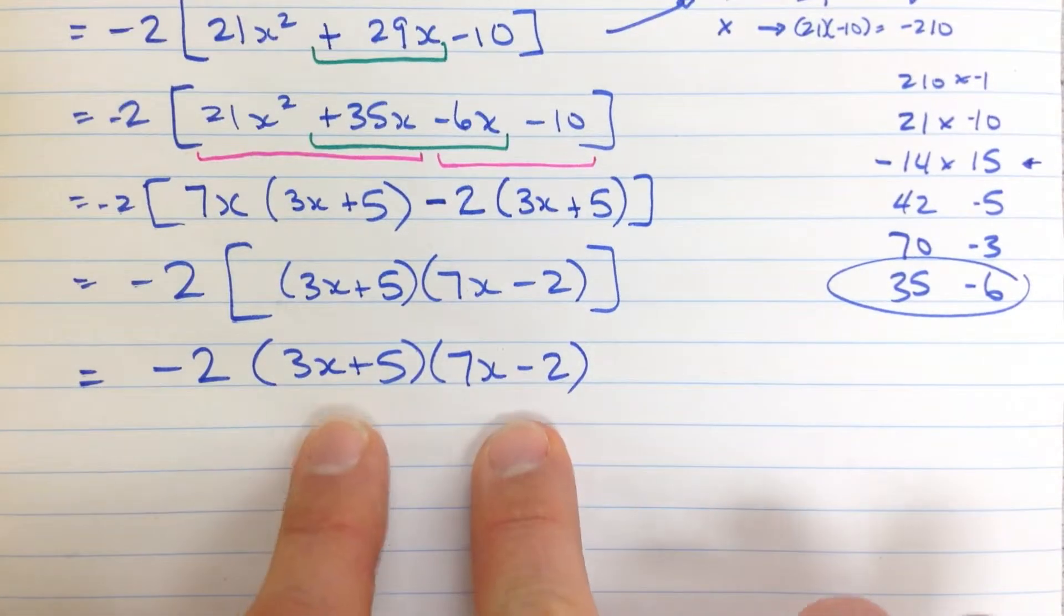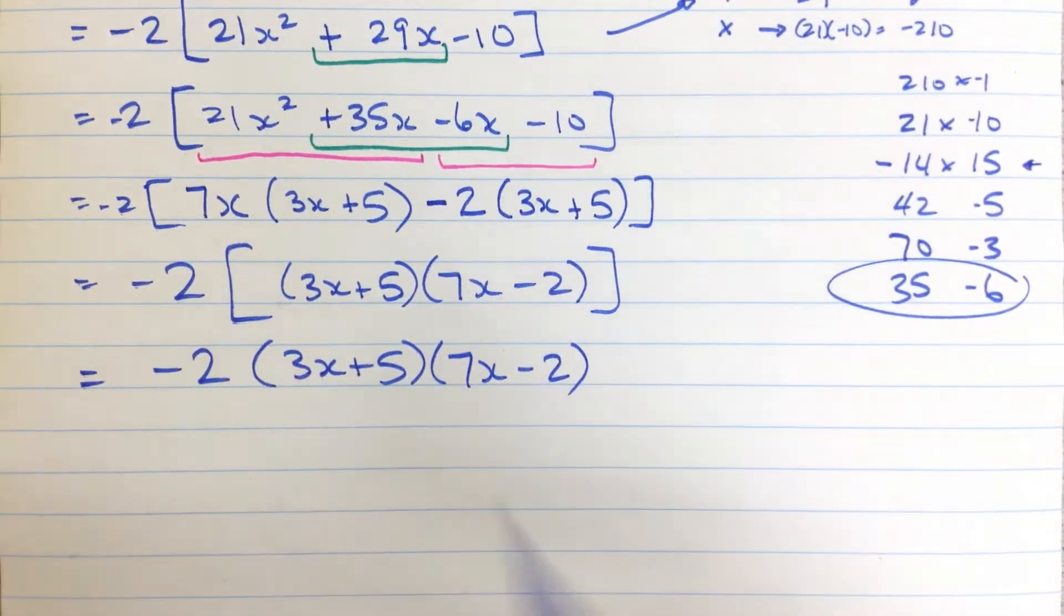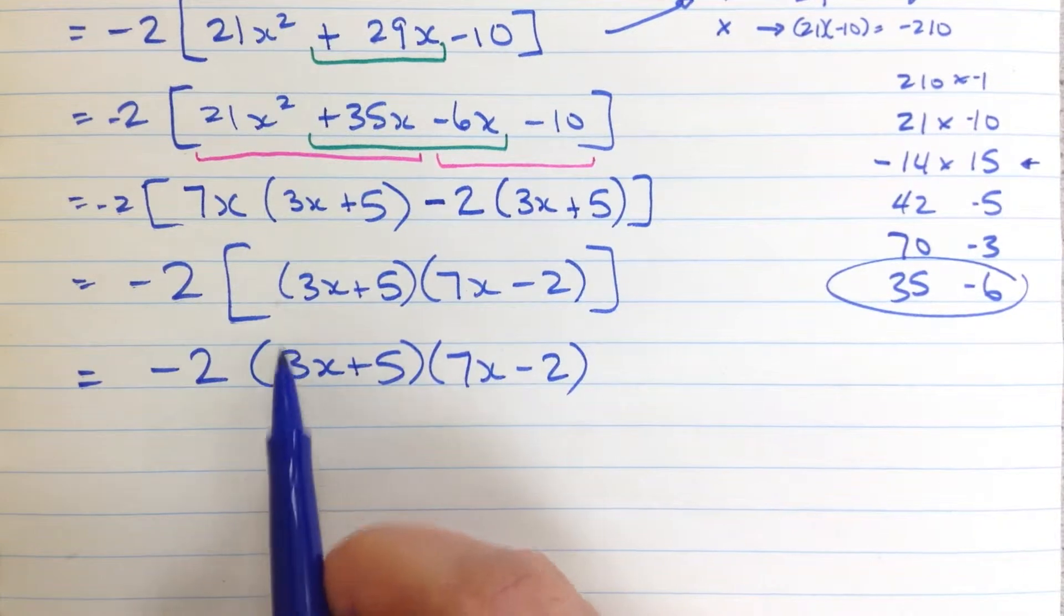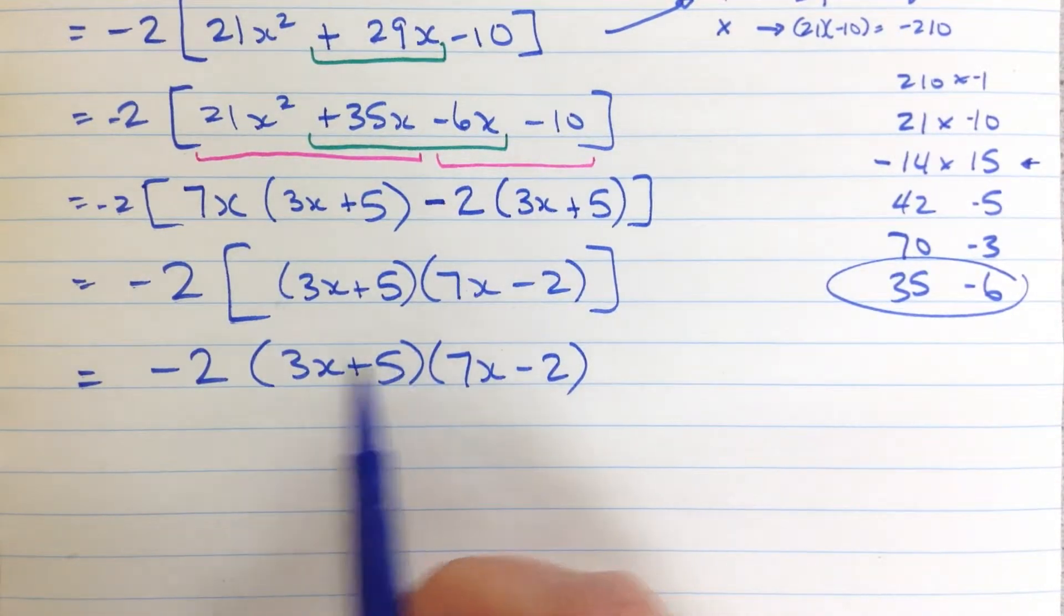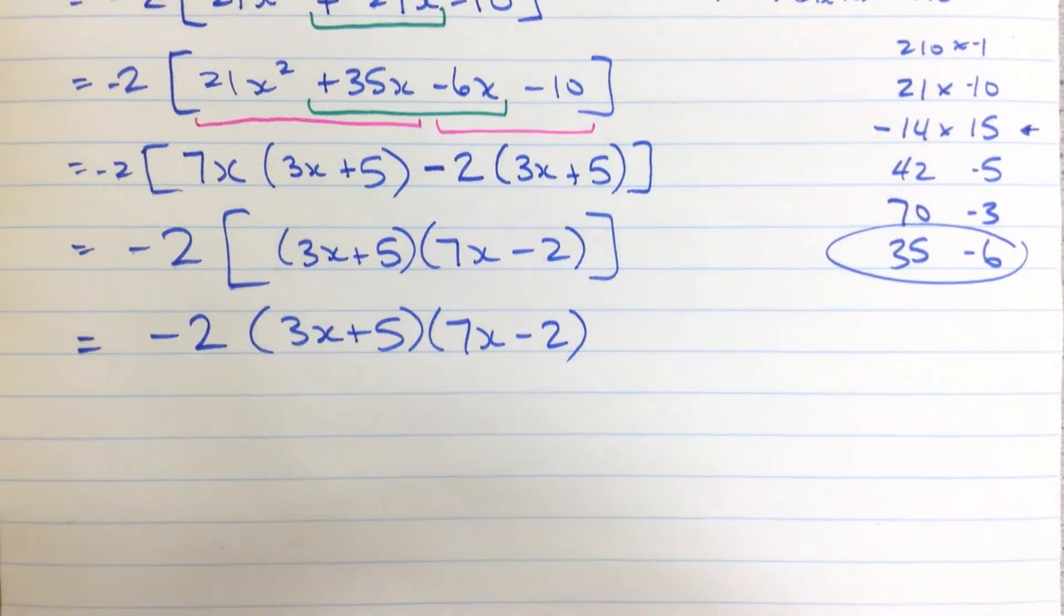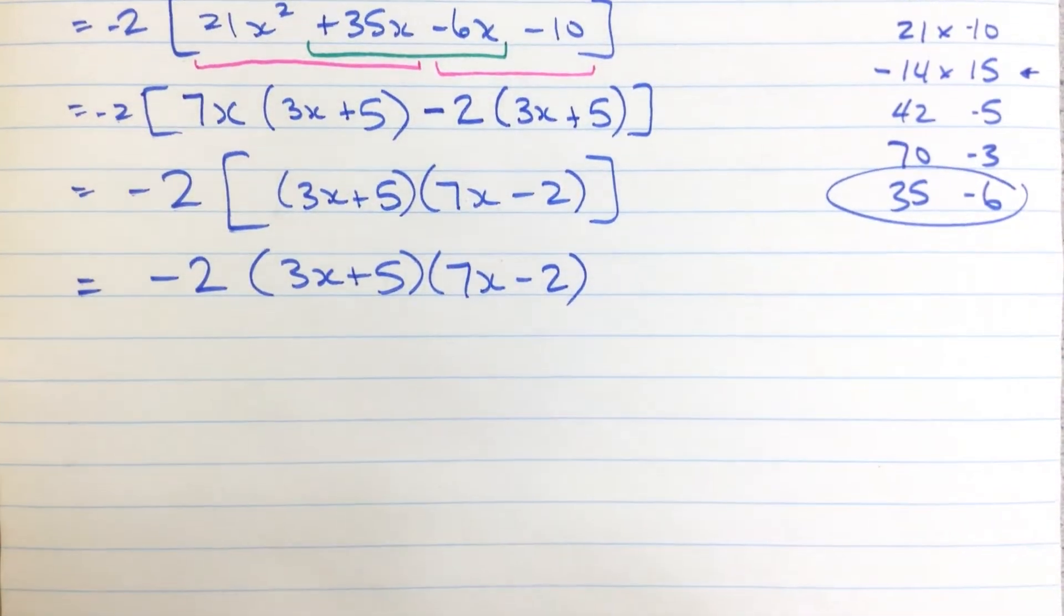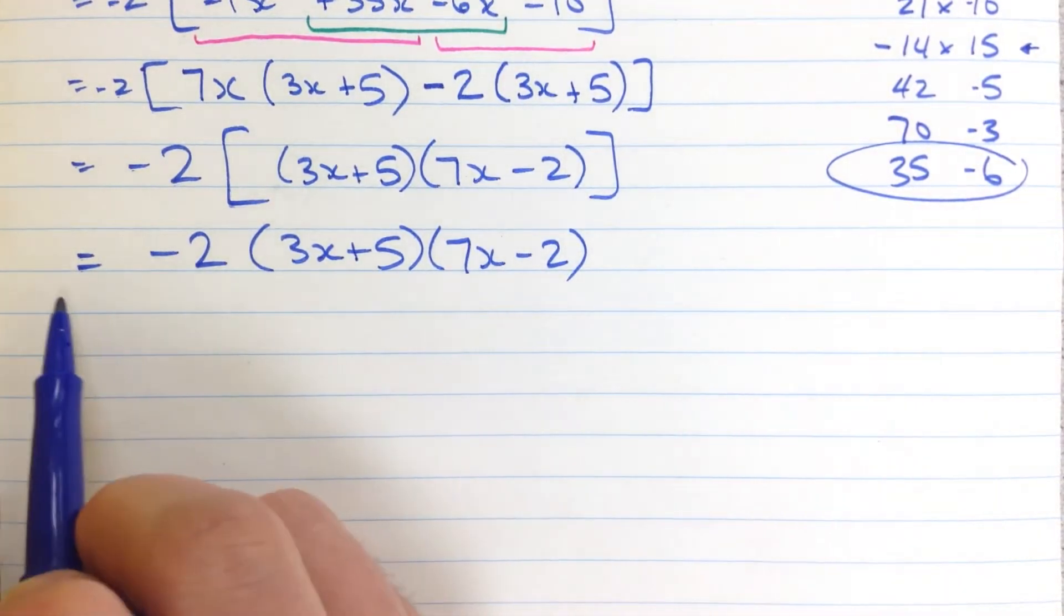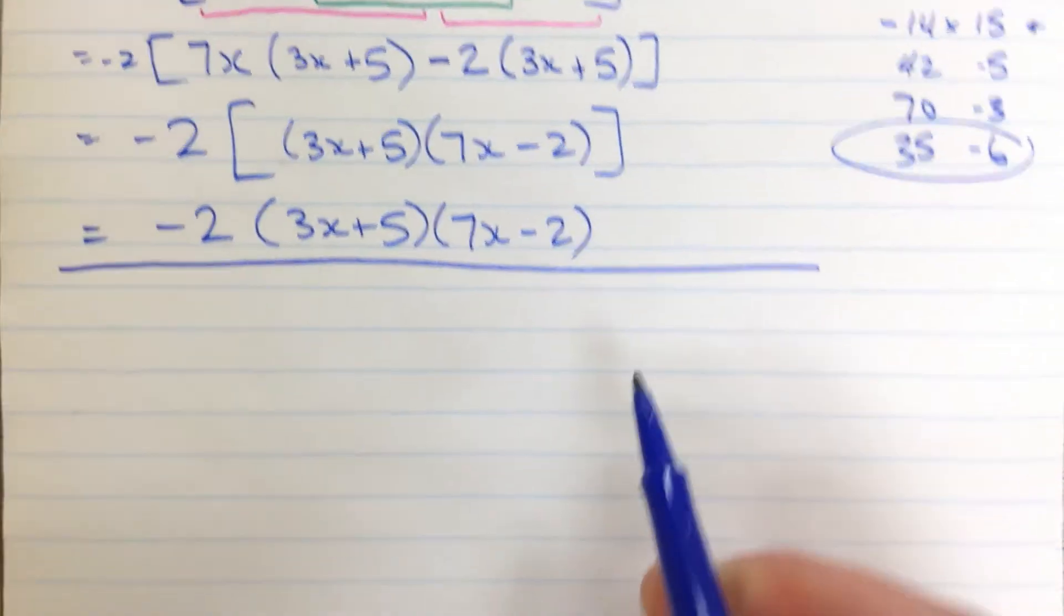So you would usually see this as -2 times (3x + 5) times (7x - 2). And these might be in a different order. If you ended up with an answer that was, say, one of these binomials was, say, 6x plus 10, then that's because you haven't factored the 2 out. And it's a good practice to factor it out all the way to the end. It's not 100% necessary for our purposes, but it's a good idea. And then we'll all be able to compare things pretty easily. All right, let's do a few more. A little faster, this one.